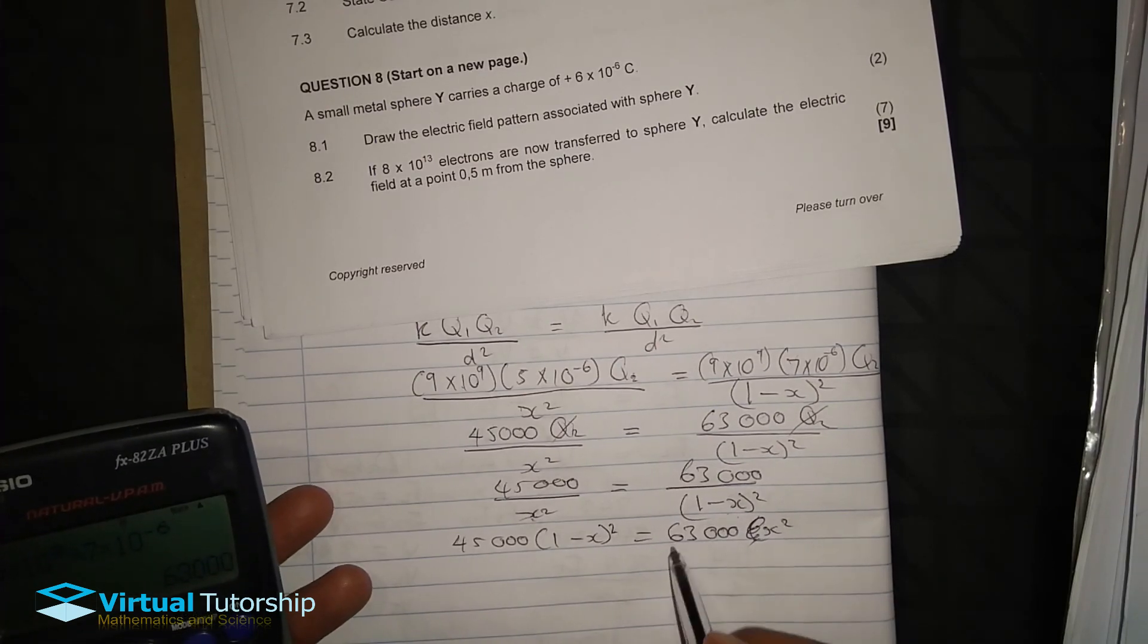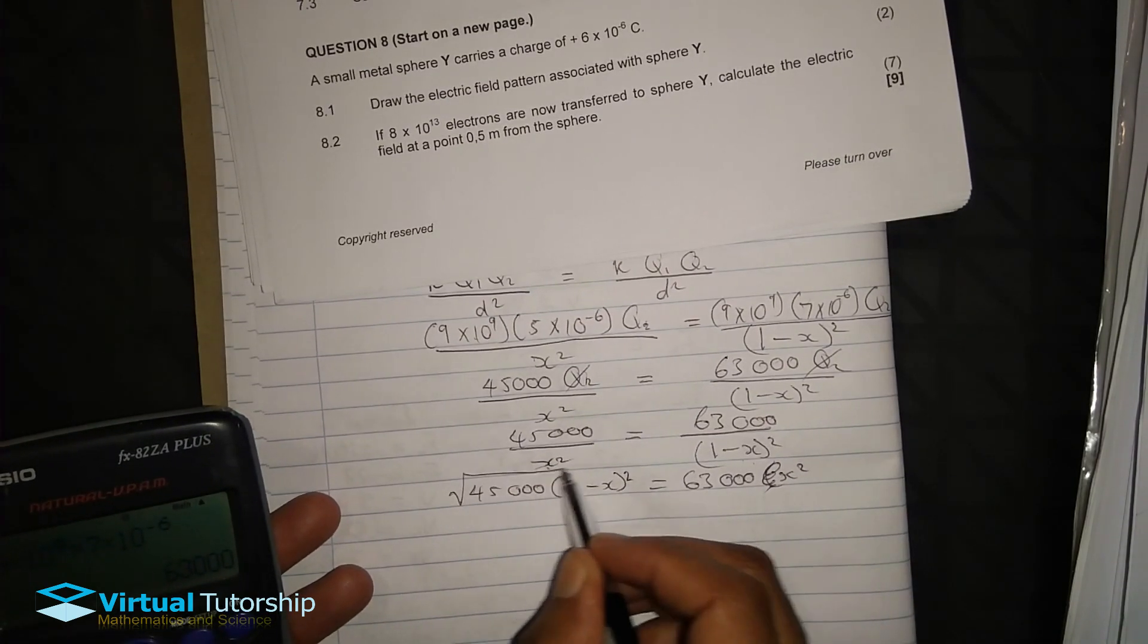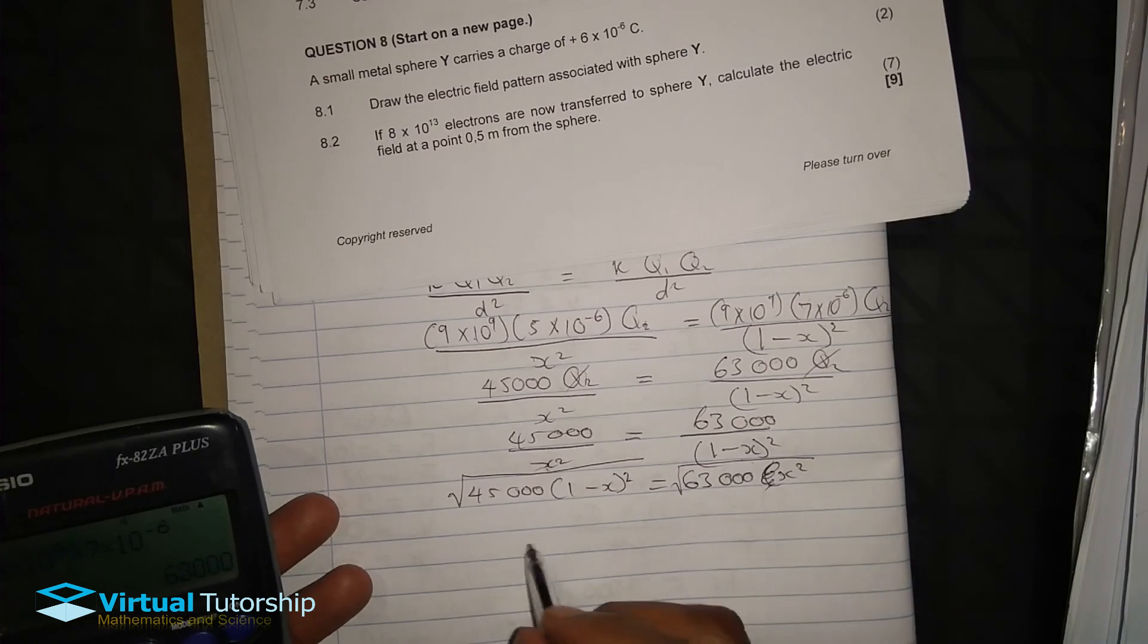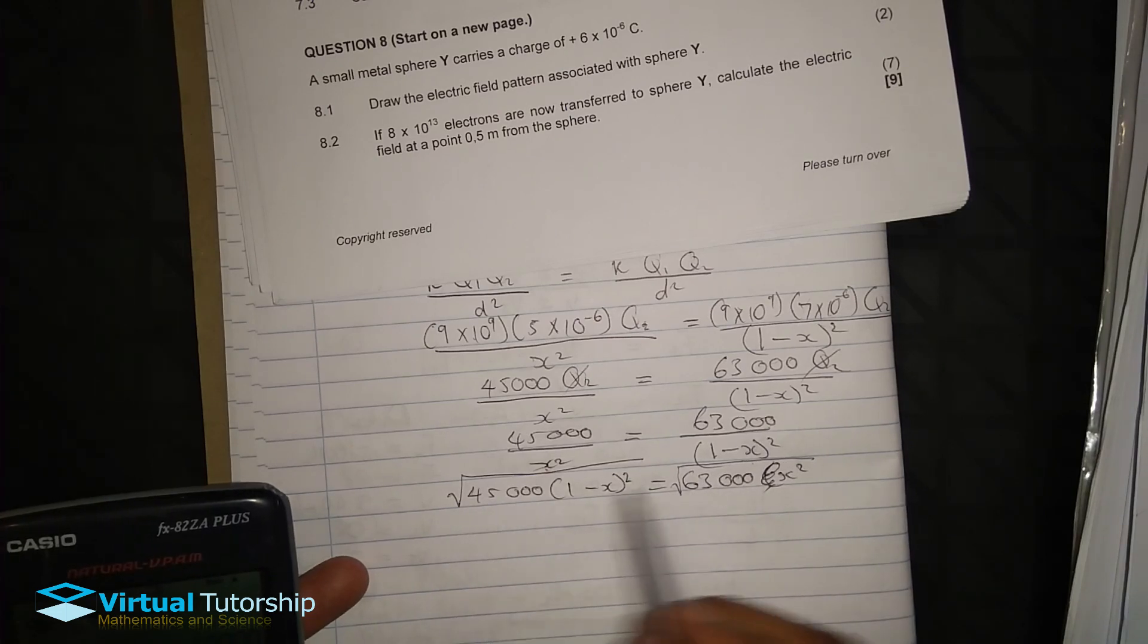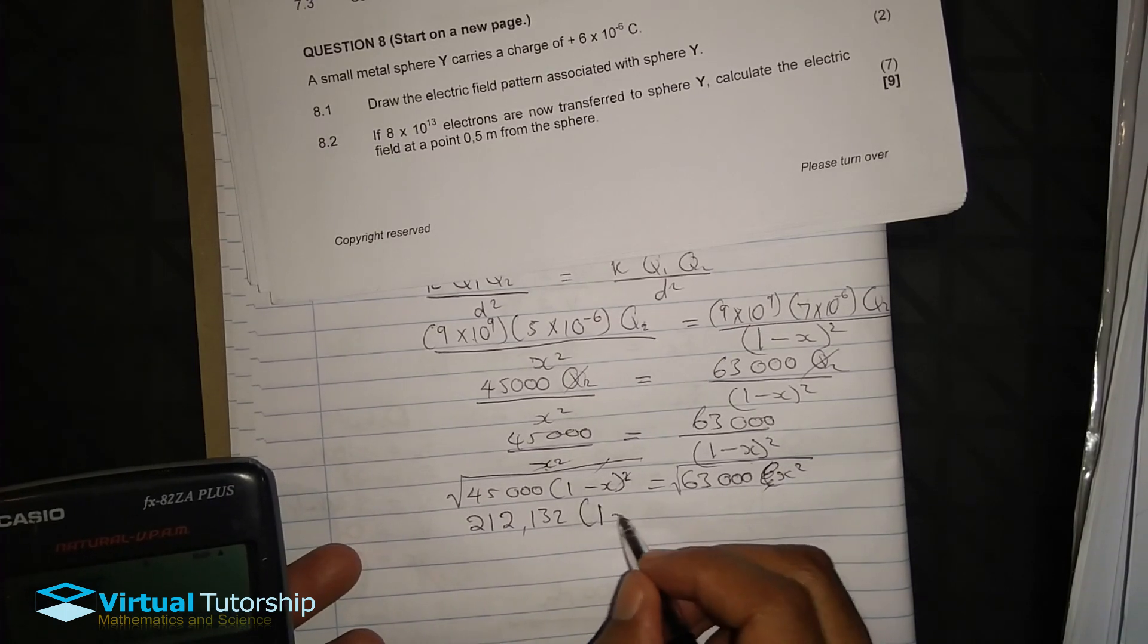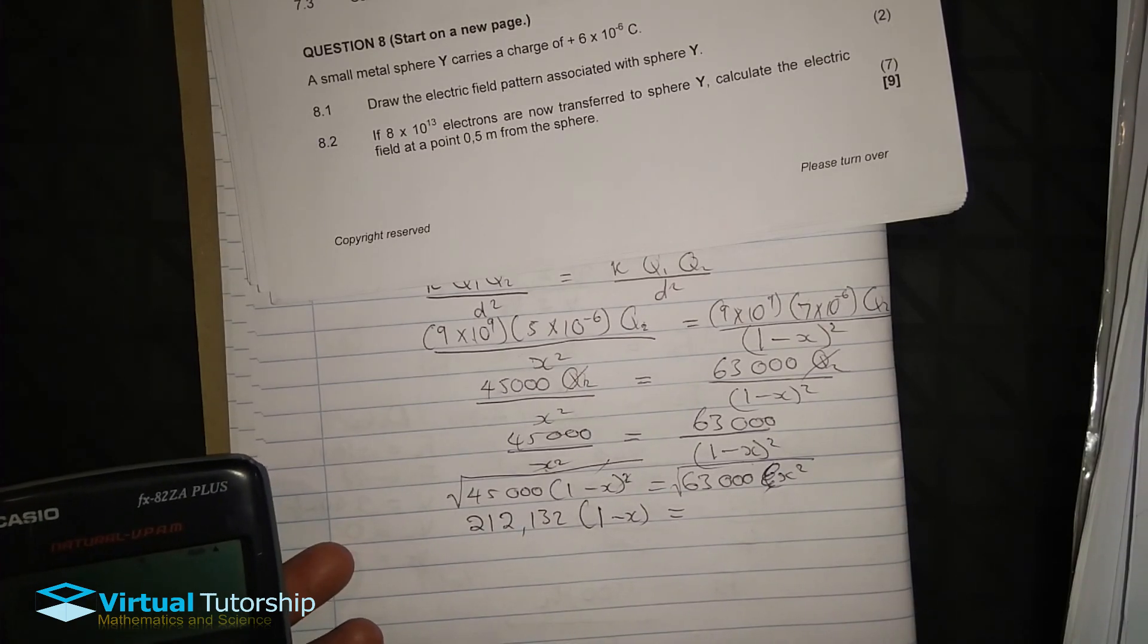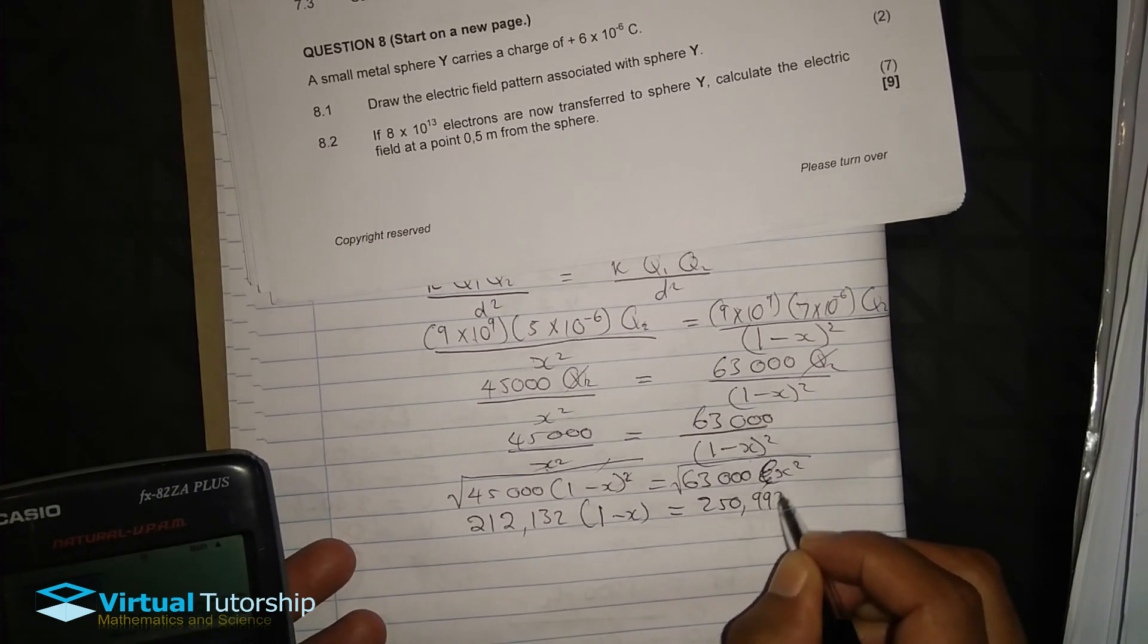So there's no need for the bracket, so it's 63,000 X squared. Now we need the square root on both sides of the equation. So the square root cancels. The square root of 45,000 is 212.132, so that's 1 minus X. The square root of 63,000 is equal to 250.998.